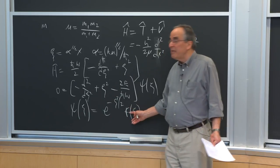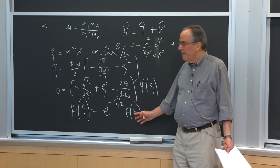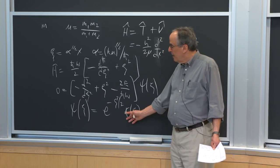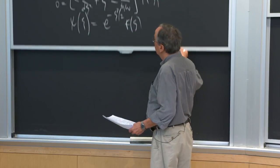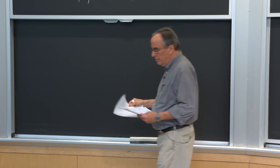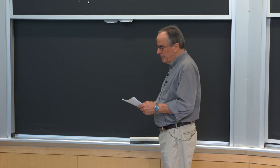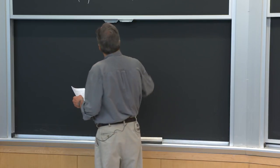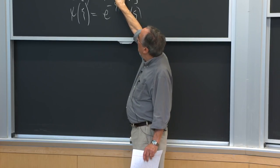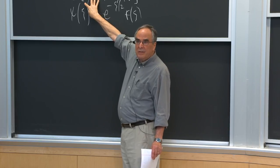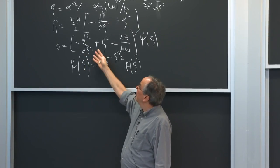The Gaussian goes to zero at plus and minus infinity pretty strongly, so it's a good way of building in expected behavior of the solution. Building in a Gaussian as a factor is perfectly legal — it defines what differential equation remains for the remaining function. It turns out we'll get the Hermite equation, and its solutions are the Hermite polynomials.